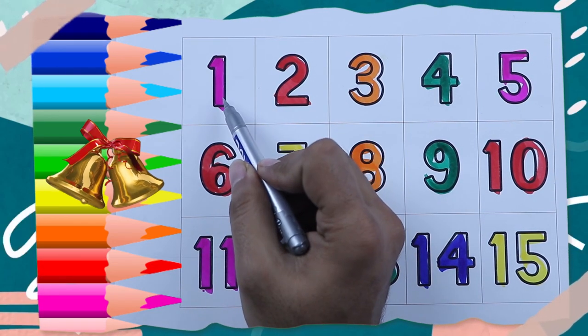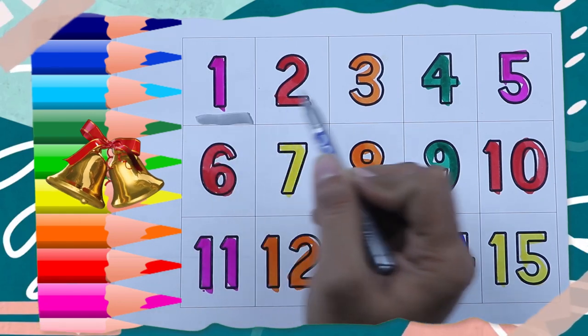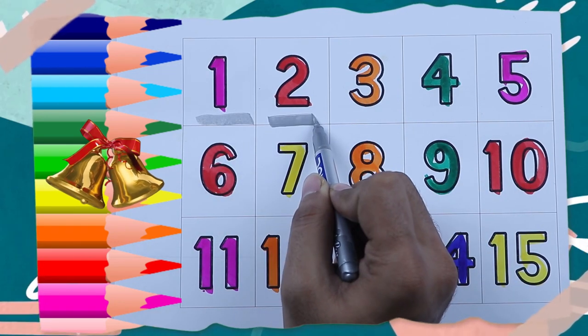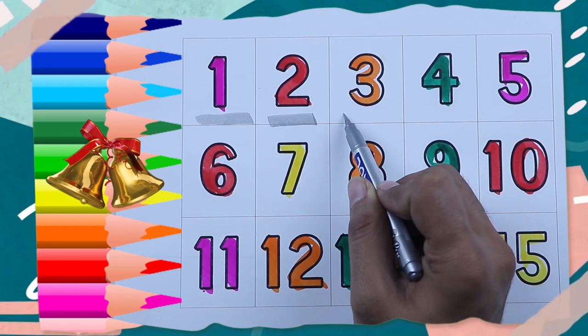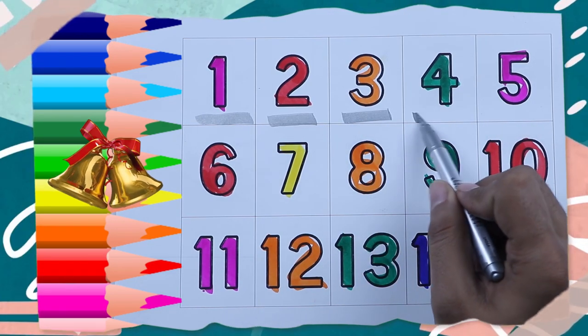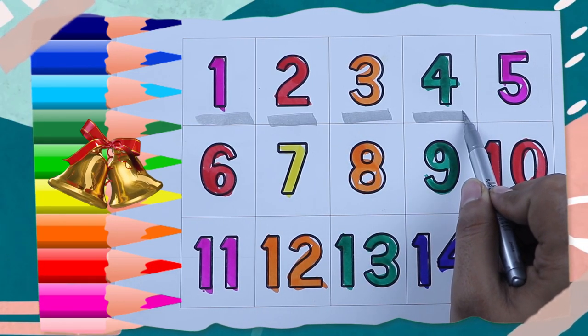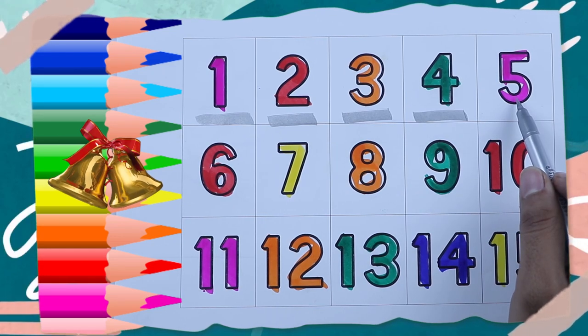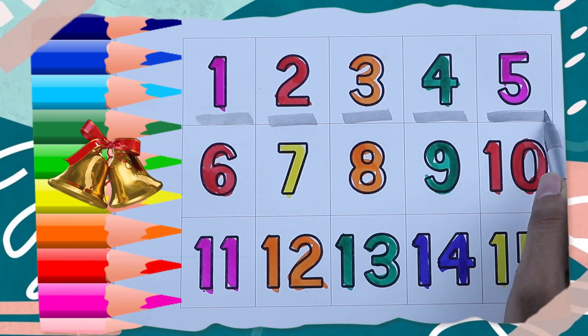It's pink color, 1 number. Red color, 2 number. Orange color, 3 number. Green color, 4 number. Which color? Pink. Pink, 5 number.